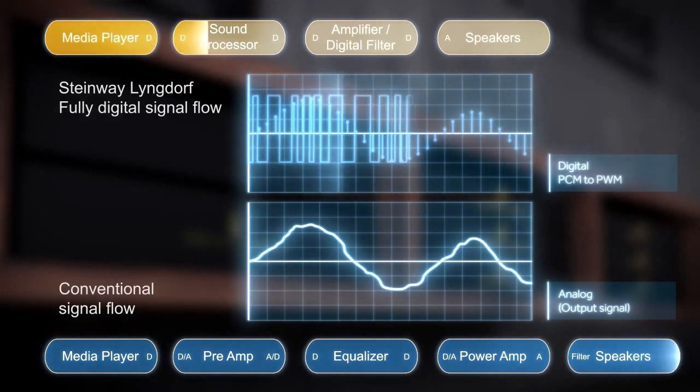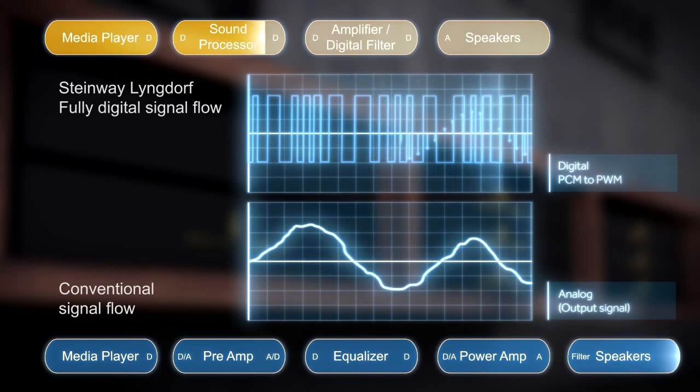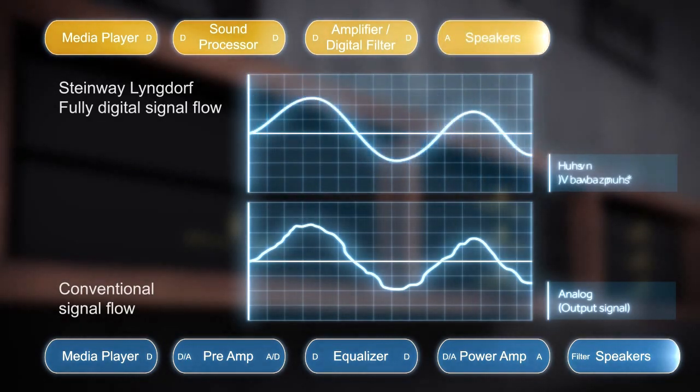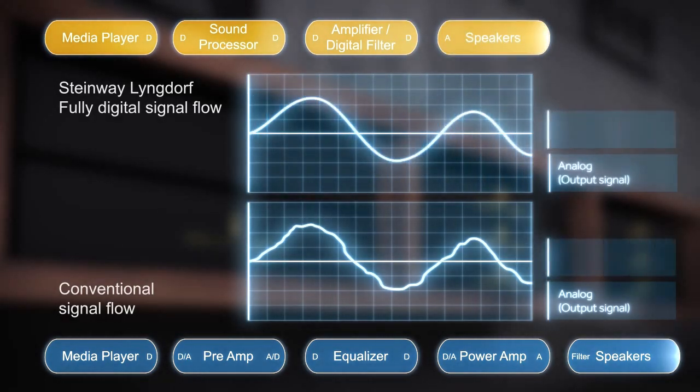Right from the media source, the audio signal is processed in the digital domain through the sound processor and amplifiers. Then right before the speaker terminals, a simple filter recreates the original audio signal which is played by the speaker.